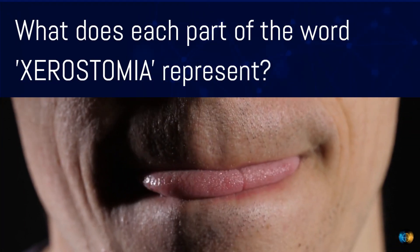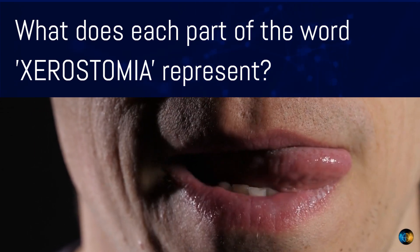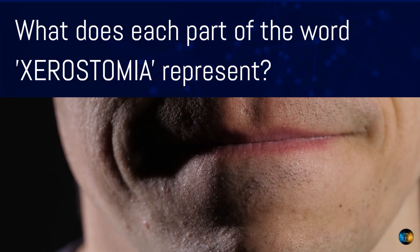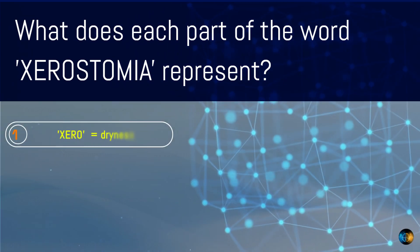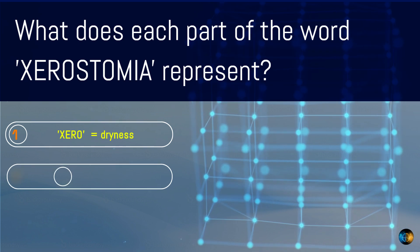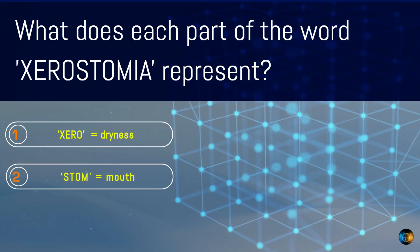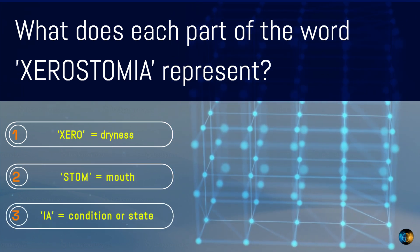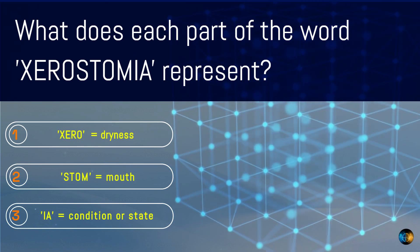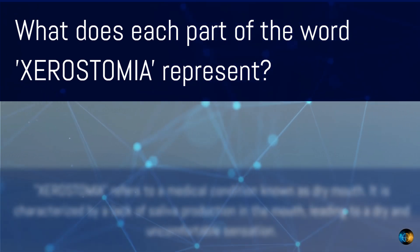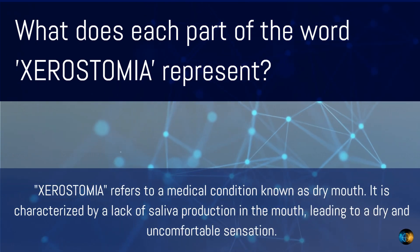What does each part of the word xerostomia represent? The prefix xero indicates dryness; stom is related to the mouth or oral cavity; and the suffix ia indicates a condition or state. Xerostomia refers to a medical condition known as dry mouth.